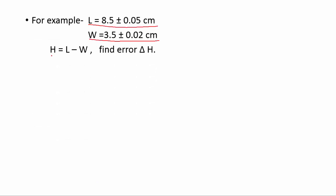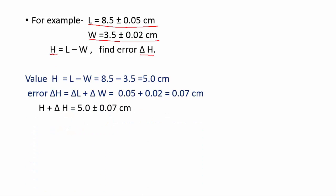For example, length of a slab is given and width of a slab is given. And then we have to find the quantity h which is the subtraction of length minus width and we have to find error also. So value h equals l minus w. We can find value h using this equation. So we subtract this and we find 5.0 cm.